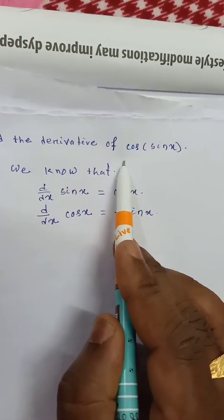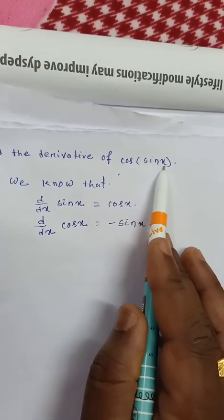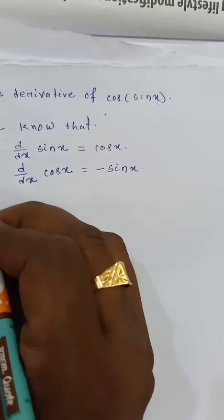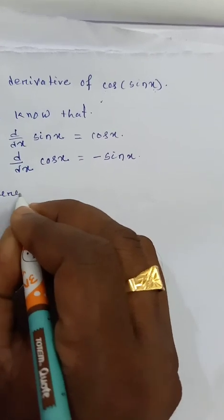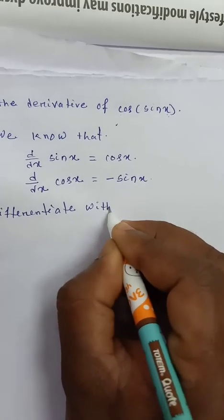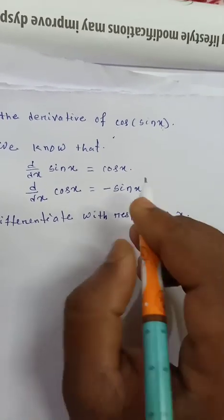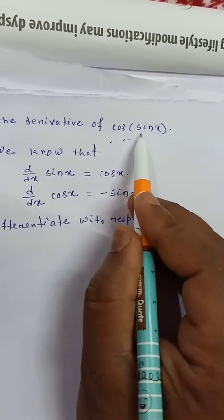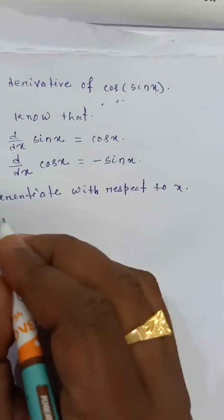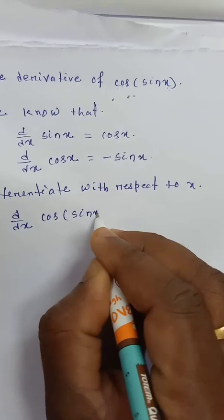In this case, the function is cos as a function of sin x, and sin is a function of x. That means we differentiate with respect to x. So, cos of sin x is a function of x, and we compute d/dx of cos of sin x.